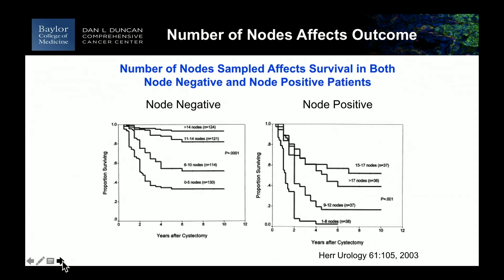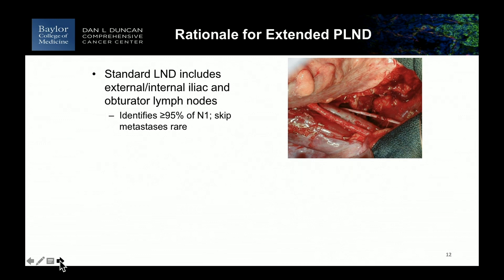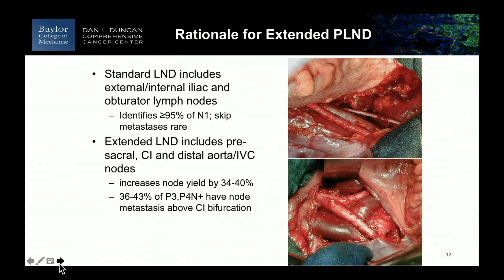This data also reflects that the more lymph nodes you remove, the better the outcome in both node-negative and node-positive disease. In a standard node dissection — external, internal, and obturator lymph nodes — we identified 95% of patients who had N1 disease. Skip metastases are rare but can occur — you could have common iliac disease only without true pelvis disease. The extended node dissection increased node yield by about 34 to 40%, and a very high percentage of locally advanced node-positive patients had nodes in the extended template.